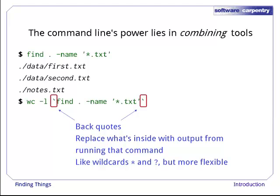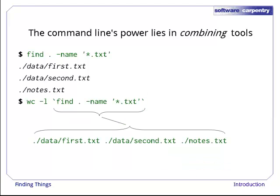and other built-in wildcards, but more flexible since we can use any command we want as our own wildcard. So, when the shell executes this line, the first thing it does is run the command that's inside the back quotes. Its output is the three file names, data/first.txt, data/second.txt, and notes.txt.